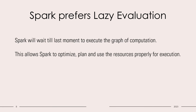We just discussed transformation and action — but what is their purpose? Basically, Spark prefers lazy evaluation. It means Spark will wait until the last moment to execute its computational graph. This computational graph is the transformational logical plan that was created. When an action is called, that transformation graph gets executed. Spark will wait until an action is called, and this is necessary for Spark to optimize and plan resources properly, which also leads to execution benefits.